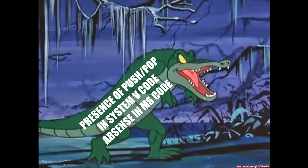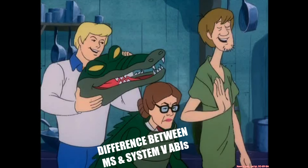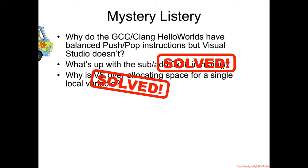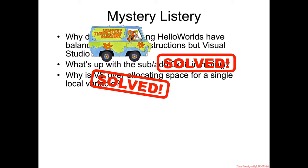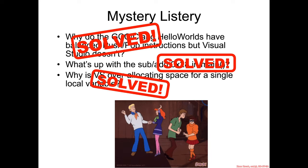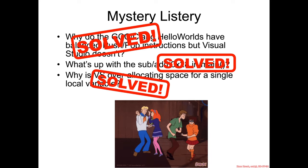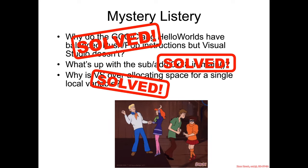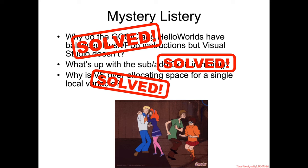So the presence of push/pop in System V code and its absence in Microsoft code was due to none other than the difference between the Microsoft and System V ABIs. With that, our mystery has been solved — the last mystery in our mystery list — and it's time to party out.